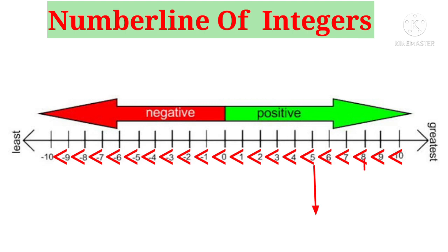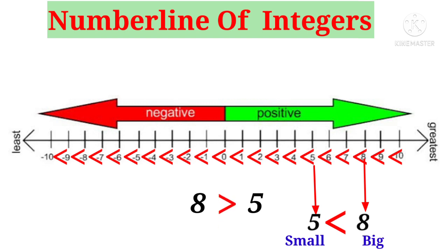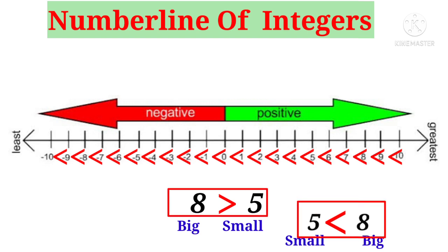Now let us take two positive numbers: 5 and 8. We can put less than symbol because 5 is small and 8 is big — they are in the order of the number line. If you reverse these numbers — 8, 5 — we put greater than symbol because 8 is big and 5 is small. So 5 is less than 8, but 8 is greater than 5.